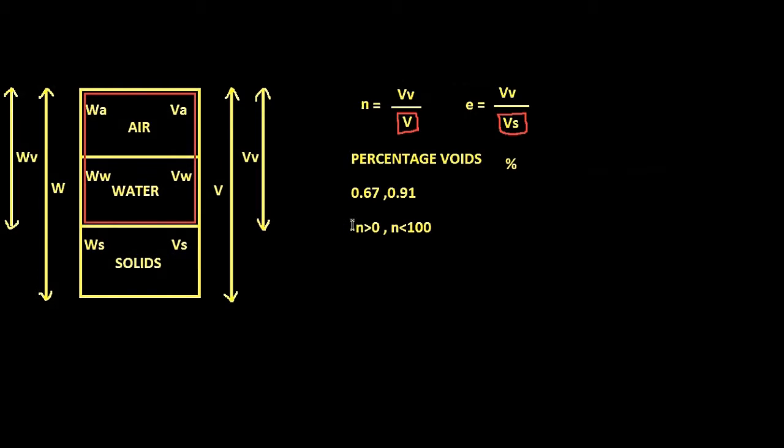A note here: people often do get confused and say the maximum value of porosity is 100%, which is impossible. Let us see here why. If maximum value of porosity is 100%, then that means this expression should be equal to 1, that is volume of voids by total volume should be equal to 1.